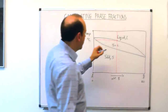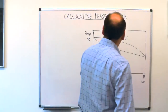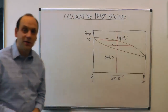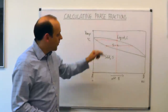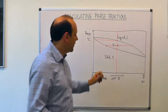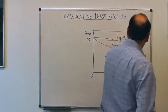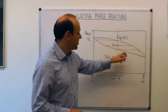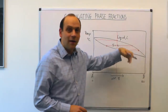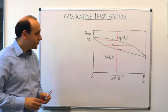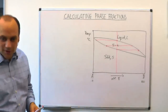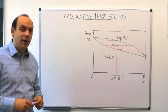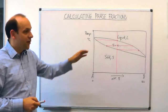Somewhere in the middle of solidification we'd have solid of one composition and liquid of another composition. When solidification was complete, we'd be at a lower temperature with solid at the alloy composition, and the very last liquid would be at its own composition on the phase diagram. The question we want to answer in this segment is: what is the phase fraction at some point during the solidification process?